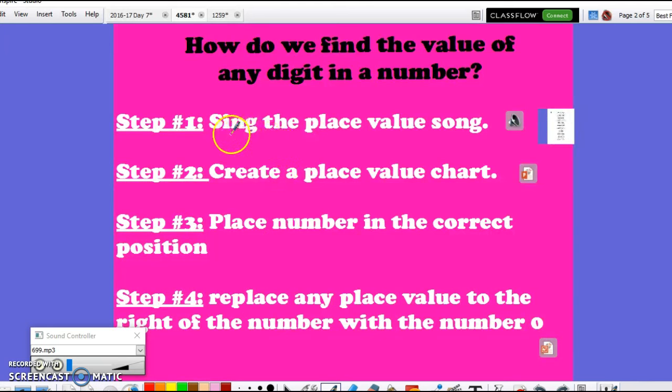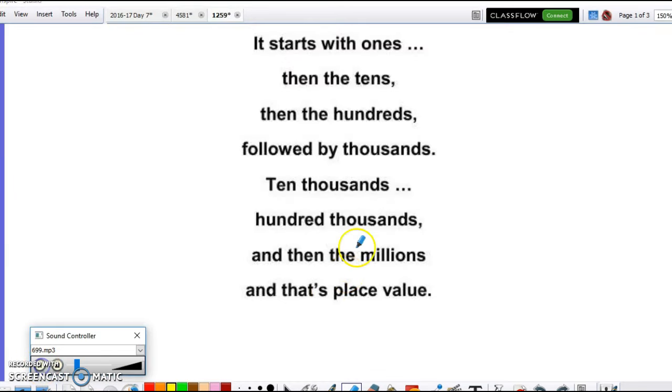The first step is singing the place value song. The song goes a little something like this. It starts with ones, then the tens, then the hundreds, followed by thousands, ten thousands, hundred thousands, and then the millions, and that's place value.